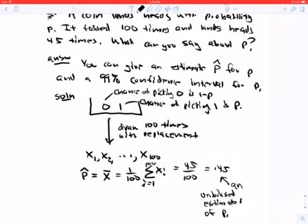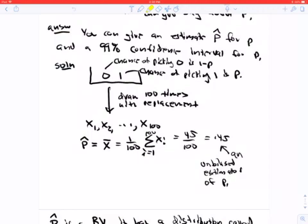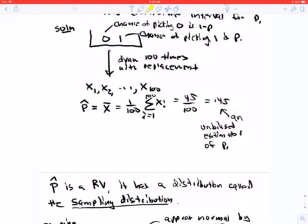So in this situation, we can think of we have a box zero one box, and x1 to x100 is our draws from this box, the sample proportion is just the sample average, which turns out to be point four or five. This is an unbiased estimator of p, which just means that the expectation of your random variable p hat is p. That's a property of the sample mean that we will see soon.